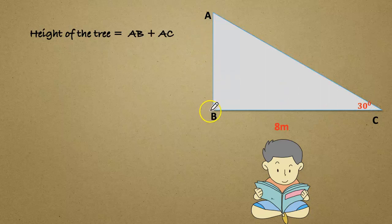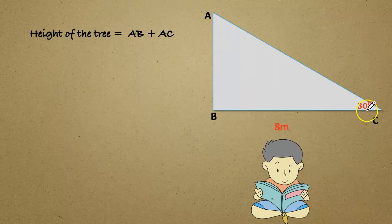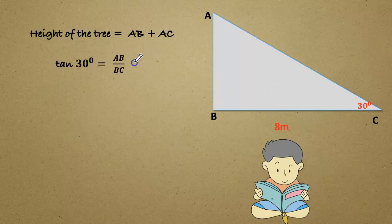So we have to use trigonometric ratio tan equals opposite by adjacent. AB is opposite of angle 30 degree. Therefore, tan 30 equals AB divided by BC.